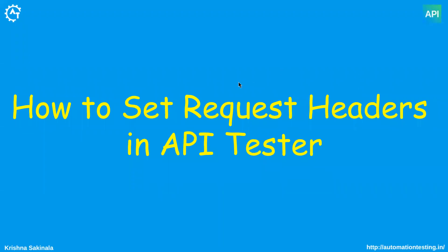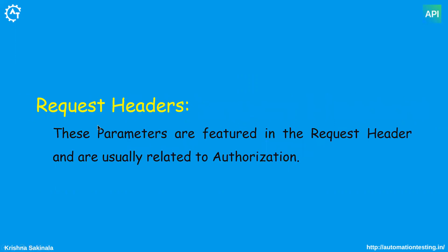In this video we will discuss how to set request headers in API testing. Request headers are parameters featured in the request header and are usually related to authorization. There can be many headers in an API — sometimes those are automatically added. These are technical information, and most of the time we will use authorization in the request headers.